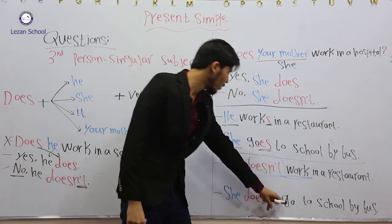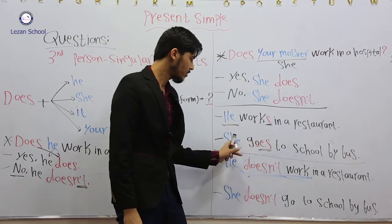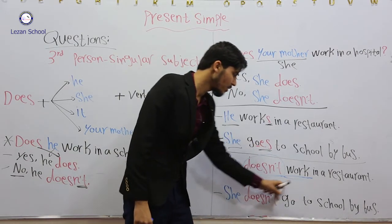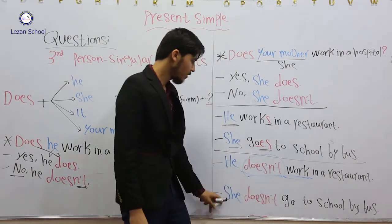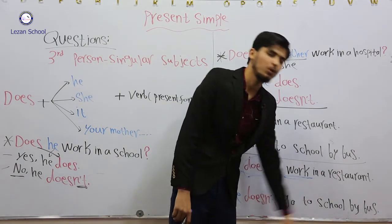The second sentence: she doesn't go. She goes becomes she doesn't go, without S. She doesn't go to school by bus.